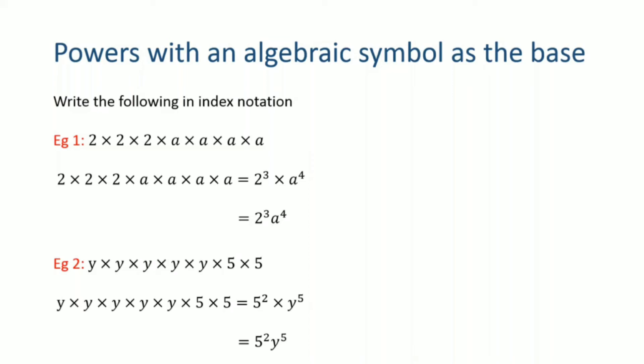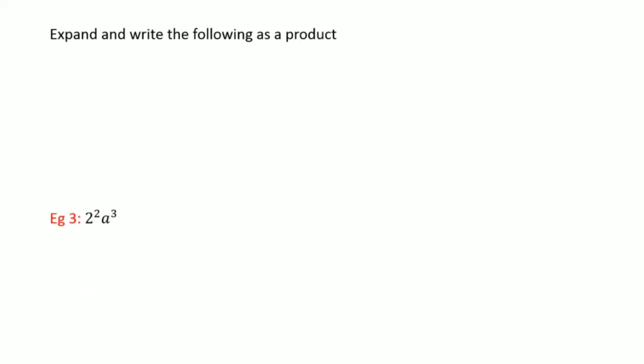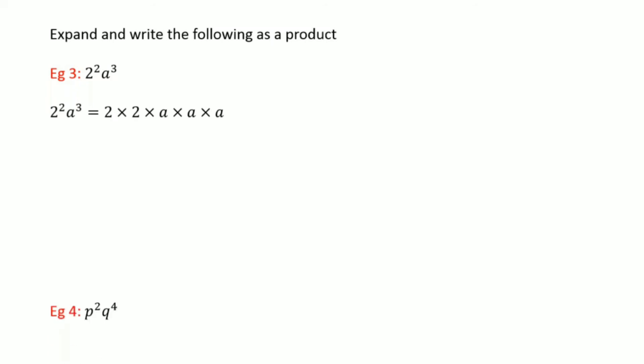The multiplication sign can be neglected and it can be written as 5 to the power 2, y to the power 5. This is how we deal with algebraic symbols as the base in indices. Now for another part where you may get questions: expand and write the following as a product. Here the index notation is given and you have to write the expanded form. For 2 to the power 2 a to the power 3, remember the operation between these two parts is multiplication. So 2 must be multiplied twice and a thrice: 2 into 2 into a into a into a. Similarly, p squared q to the power 4 expands to p into p and q four times.